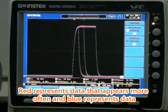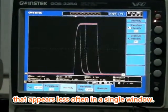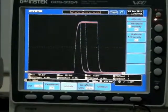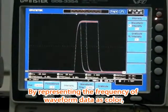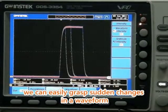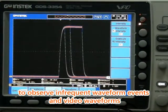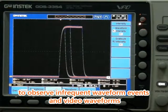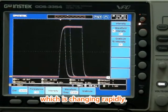Red represents data that appears more often and blue represents data that appears less often in a single window. By representing the frequency of waveform data as color, we can easily grasp sudden changes in a waveform, observe infrequent waveform events and video waveforms which are changing rapidly.